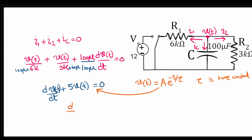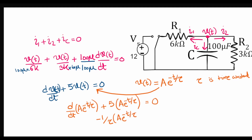Substituting: d/dt[A·e^(−t/τ)] + 5·A·e^(−t/τ) = 0. Taking the derivative gives (−1/τ)·A·e^(−t/τ) = −5·A·e^(−t/τ). The A·e^(−t/τ) terms cancel from both sides, giving a time constant τ = 0.2 seconds.